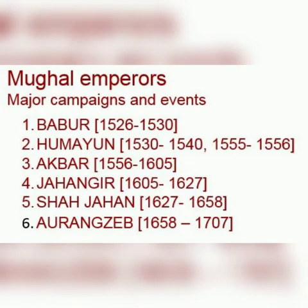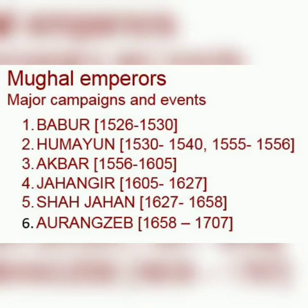He made Delhi the capital of his empire. Let us now read through the Mughal emperors' major campaigns and events. Babur (1526–1530): In 1526 he defeated Ibrahim Lodi and his Afghan supporters at Panipat. In 1527 he defeated Rana Sangha and Rajput allies at Khanwa. In 1528 he defeated the Rajputs at Chanderi and established control over Agra and Delhi before his death.